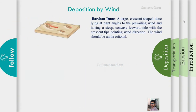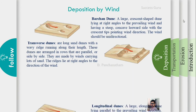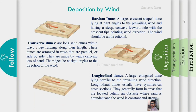Barchan dunes are C-shaped with a gentle windward slope and a steep leeward slip face. Transverse dunes are deposited in one direction with regular spacing and form when sand supply is abundant. Longitudinal dunes run parallel to the wind direction and are symmetrical.